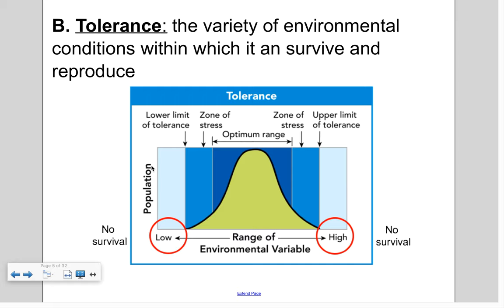A key vocab term is tolerance — basically what environmental conditions an organism can go through to survive and reproduce. It has an optimal range, zones of stress, and survival rates taper off at the upper and lower limits of tolerance. Think of a plant: it has a perfect amount of water, but too much causes stress, and extreme excess drowns it. Too little water causes wilting, and eventually, at the lower limit of tolerance, the organism dies. Organisms, including us, all have a tolerance range.